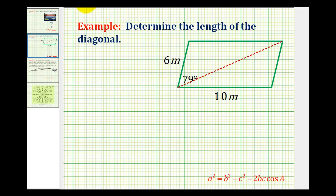One of the things we have to remember about a parallelogram is that adjacent angles are supplementary, meaning they have a sum of 180 degrees. So if this is 79 degrees, this angle here must be 101 degrees.